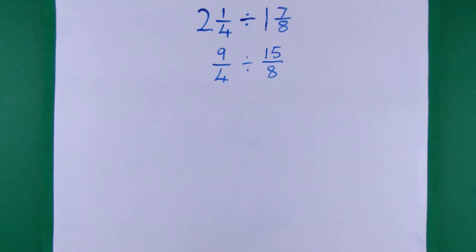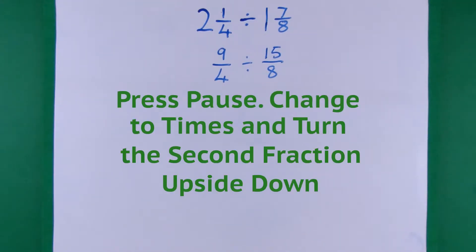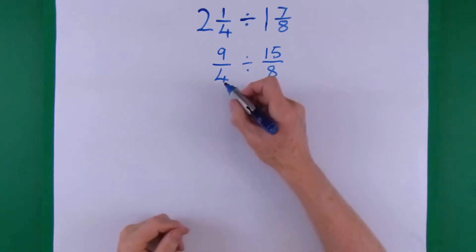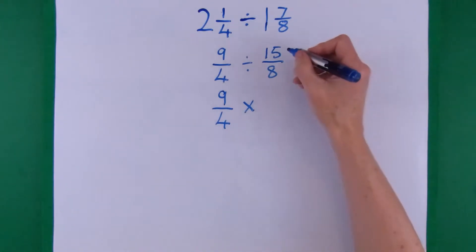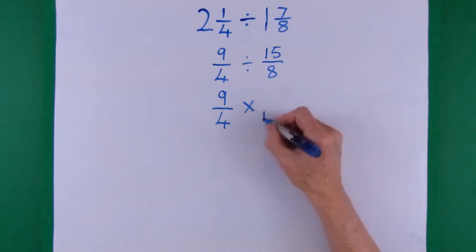Now the next thing to do is to change to your times and turn the second fraction upside down. Press pause, change to your times and turn the second fraction upside down. Now keep the first fraction the same. Change the divide to a times and when you change to your times, the times number becomes the divide number and the divide number becomes the times number. In other words, we turn it upside down.